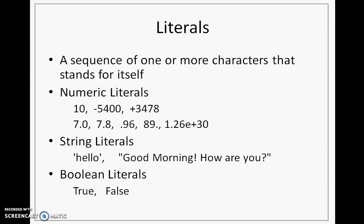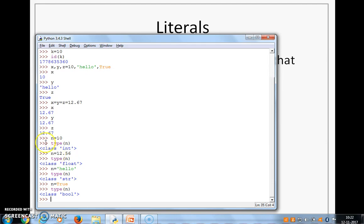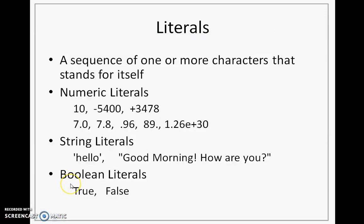Let's look at what literals are. A literal is a sequence of one or more characters that stands for itself. When I say n equal to 10, this 10 that you see is a literal — n is a variable. It is a sequence of characters, 1 followed by 0, that means itself, that means 10. Similarly, hello in single quotes is a literal, 12.56 is a literal, and True is a literal. Because we have various data types, we also have various types of literals.